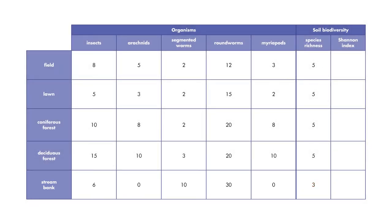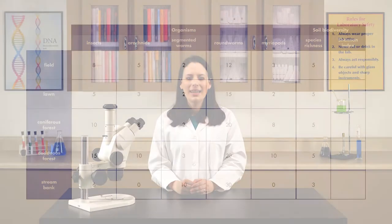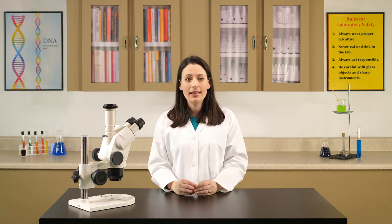According to species richness, the field, lawn, and forest communities have the same biodiversity, while the stream bank has less biodiversity. Species richness tells us how many species categories exist in a sample, but it does not tell us how widely distributed those species are.